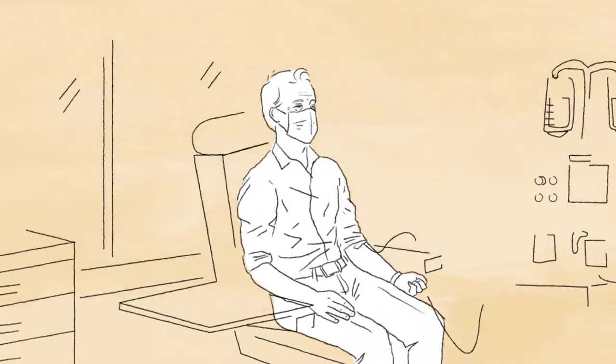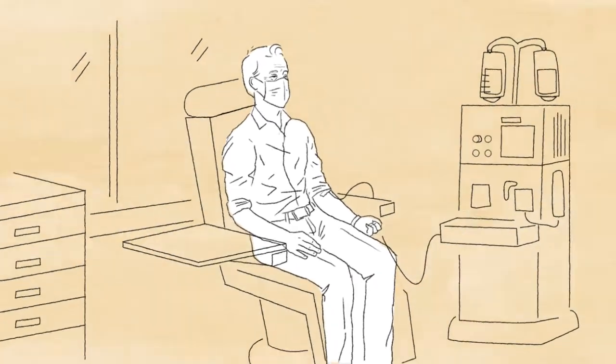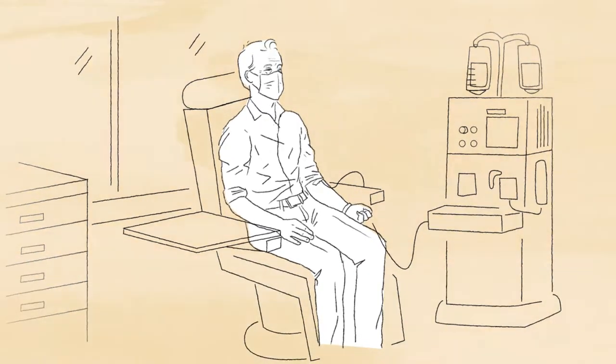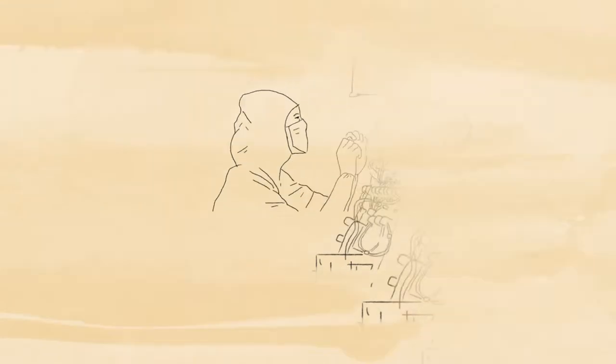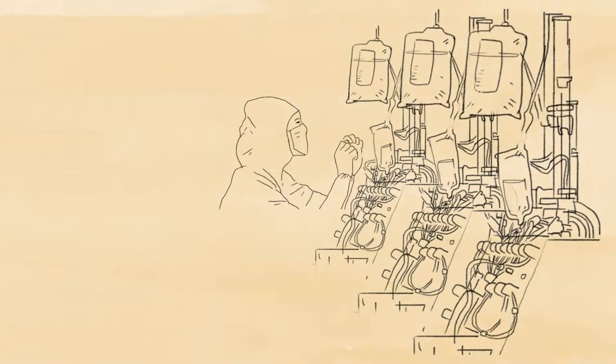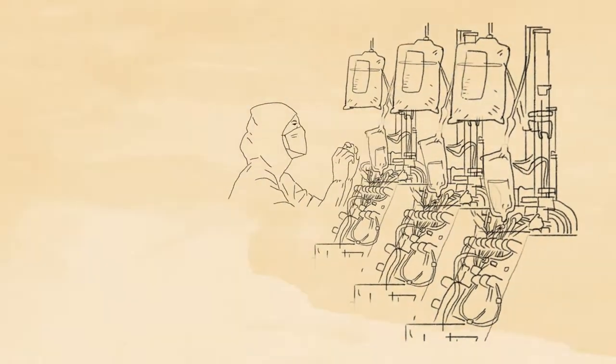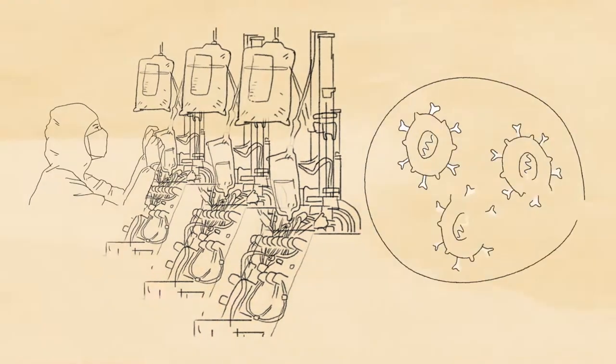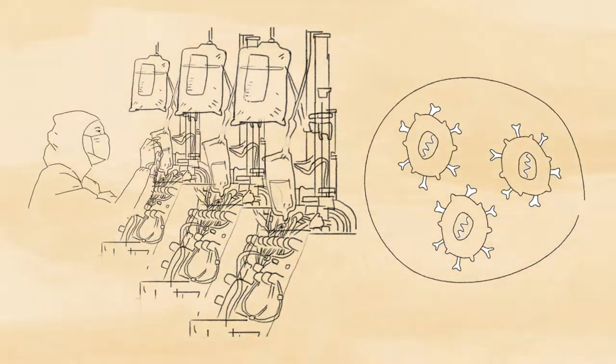To start, some of my blood was drawn to collect my T cells, a type of white blood cell in the immune system. Then, in a lab, genetic material was added to turn them into CAR-T cells. This genetic modification helps the T cells find and target some cancer cells.